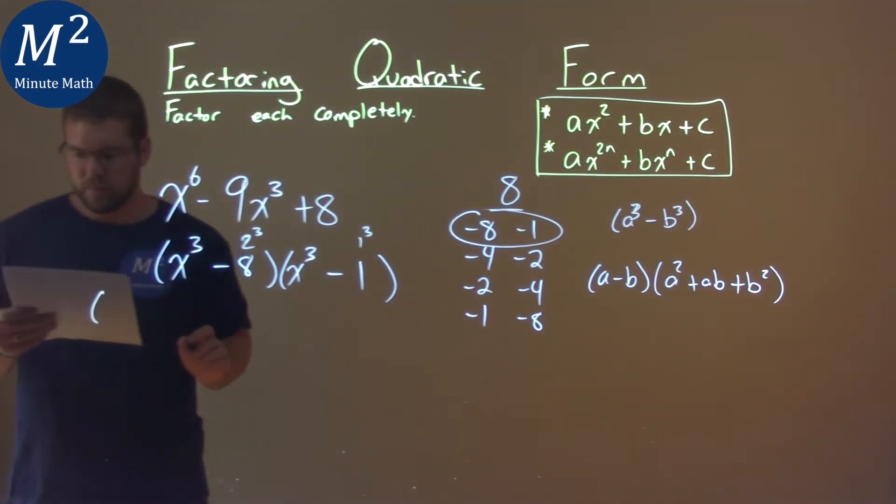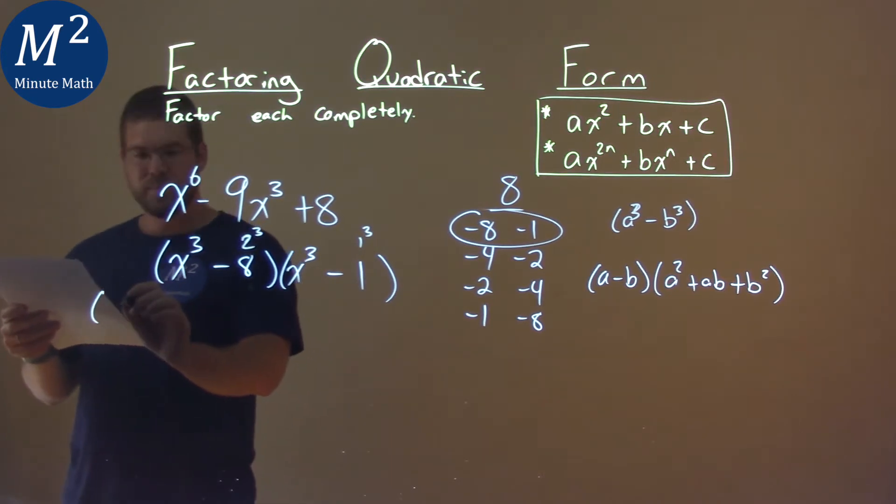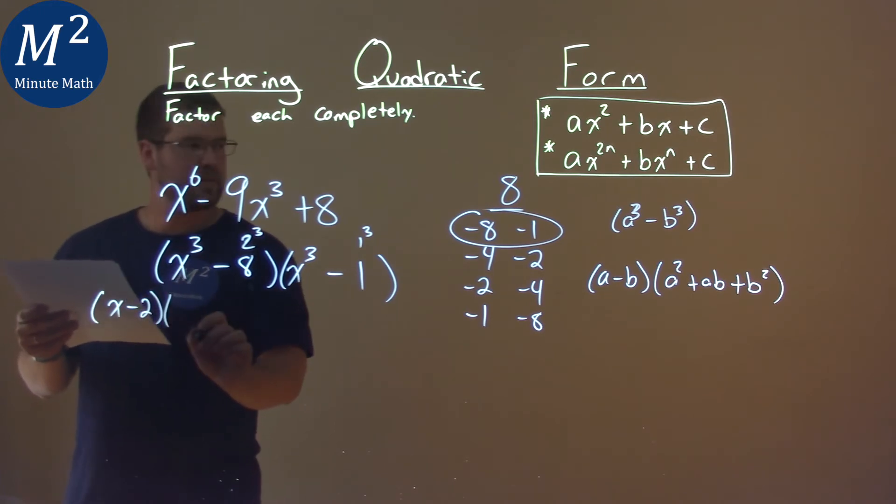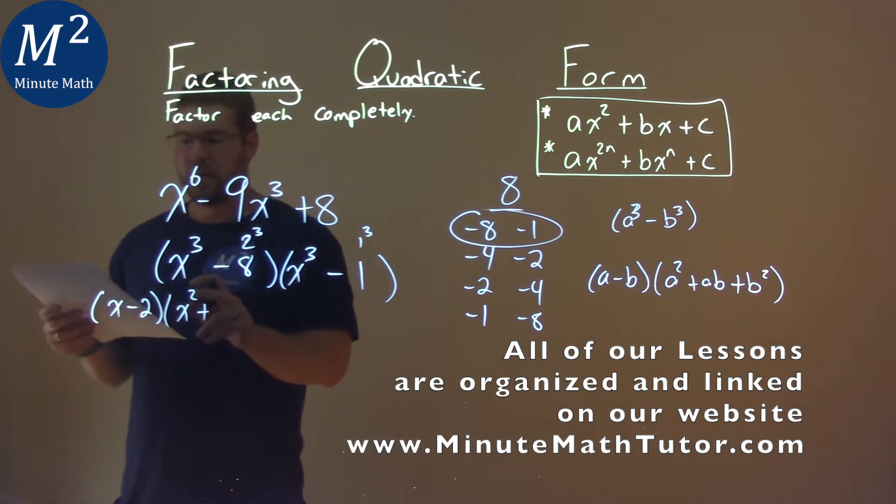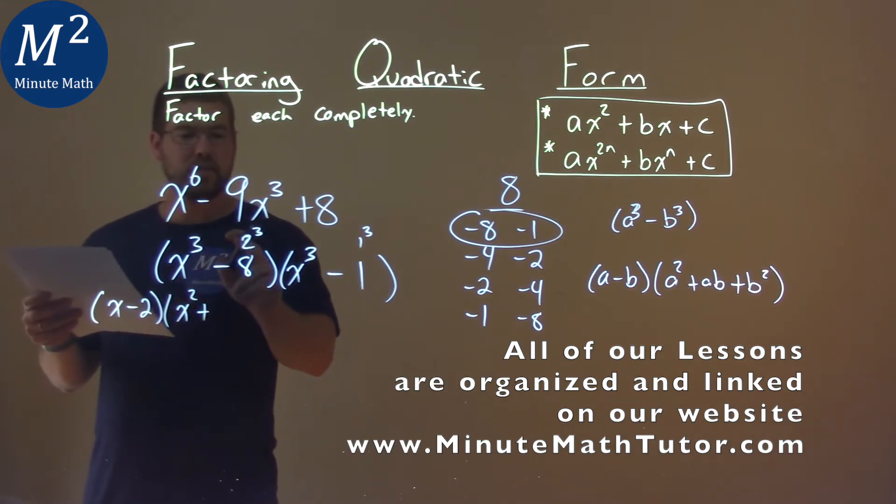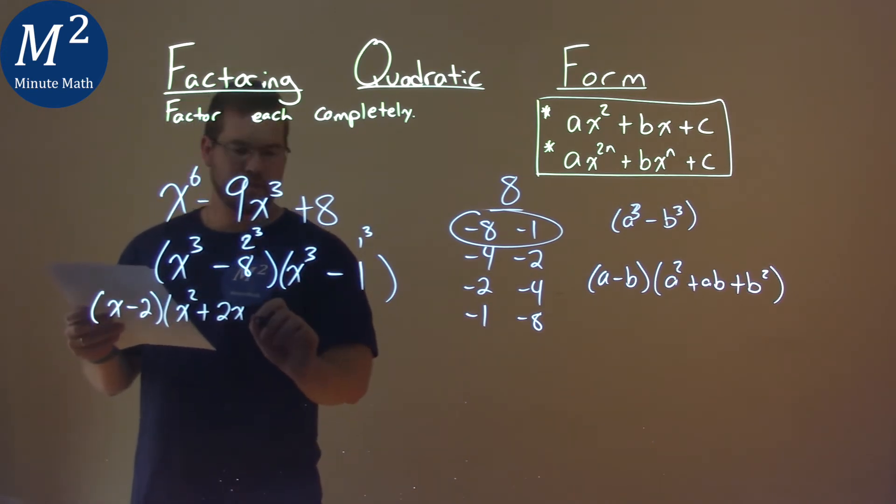So to start off here, we have x as our a value, so it's x here, minus our b value, which is 2, times our x value squared, plus a times b, so x times 2, which is 2x, plus 2 squared, which is 4.